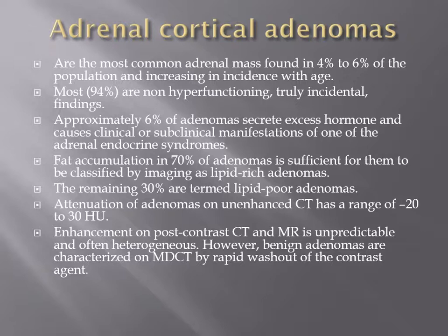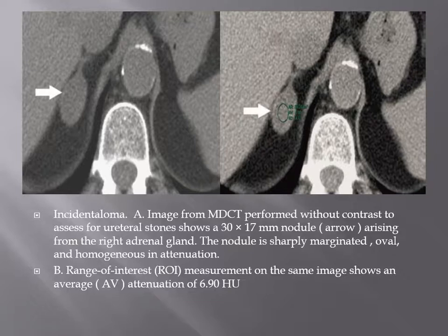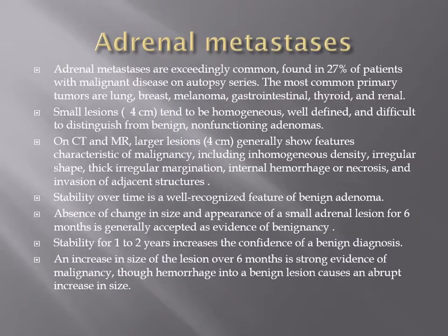The attenuation of adenoma on unenhanced CT is between minus 20 to 30 Hounsfield units. Enhancement on post-contrast is usually unpredictable and could be heterogeneous. Benign adenoma is characterized on multi-detector CT by rapid washout of contrast agent. This is an incidental right adrenal mass measuring 30 by 70 mm, with a density measuring 6.9 Hounsfield units.